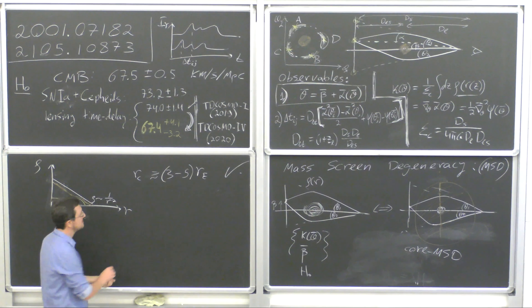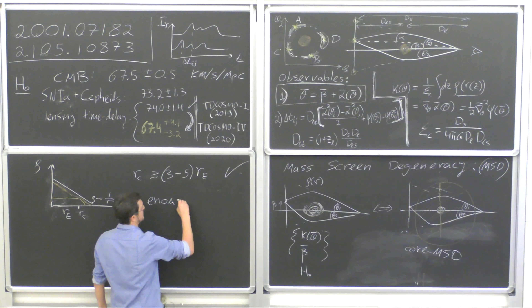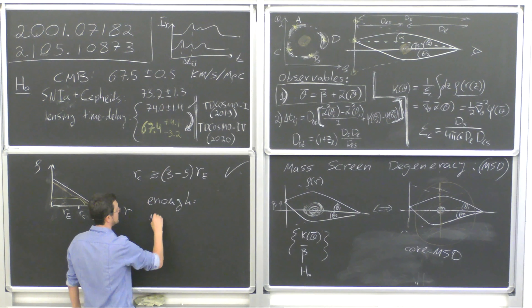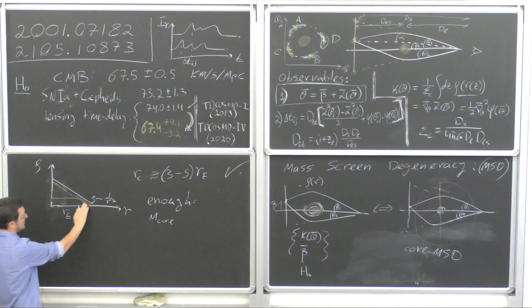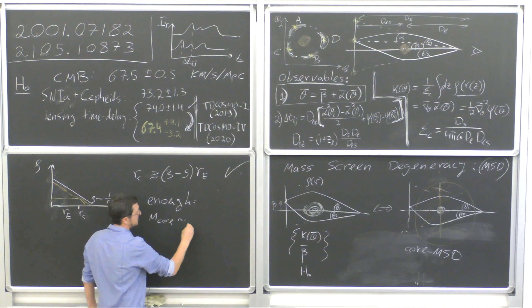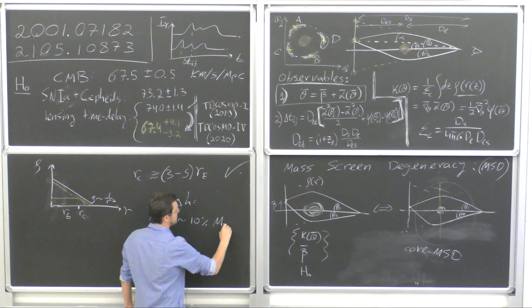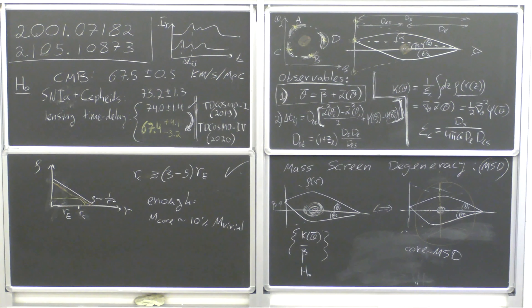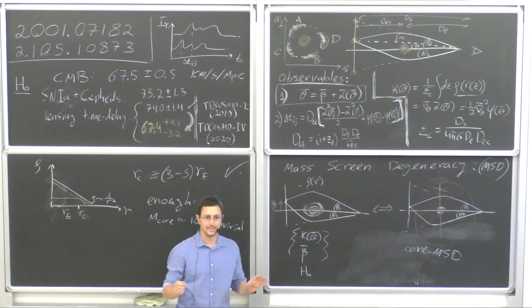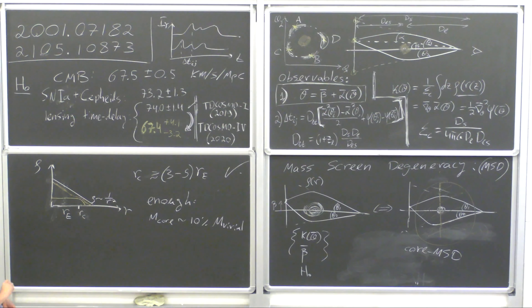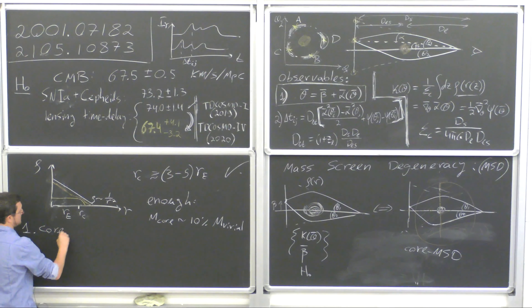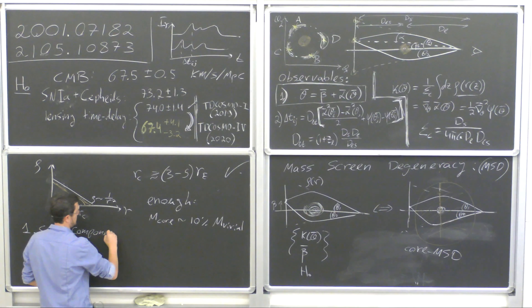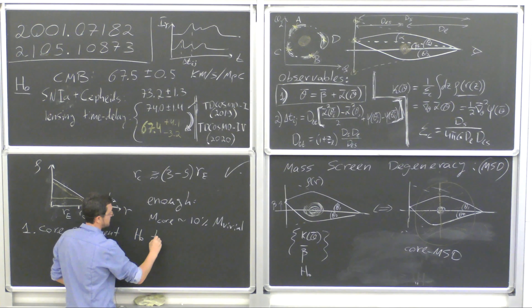It's enough to have total mass in this core component of around 10% of M_virial of the galaxy. In the Milky Way, this is allowed. For galaxies that are a gigaparsec away, this is very much allowed. So: a core component kills the H0 tension from lensing.